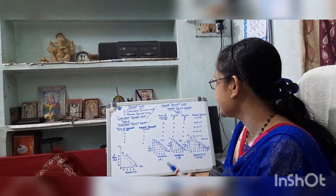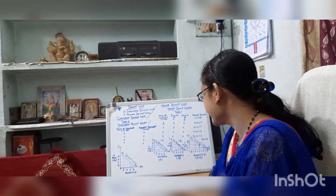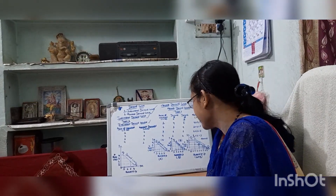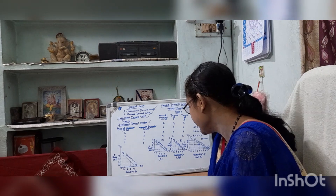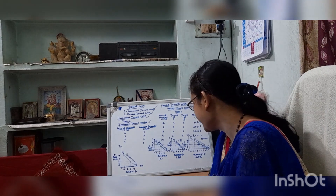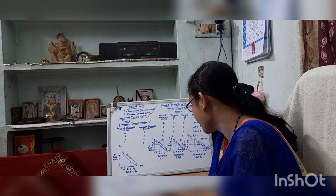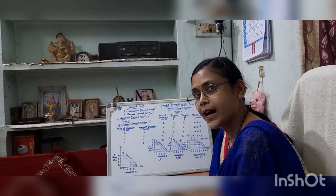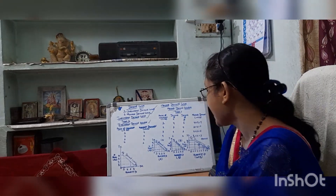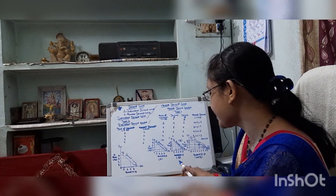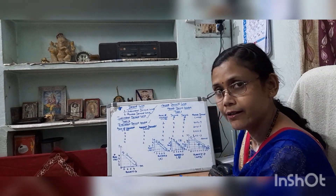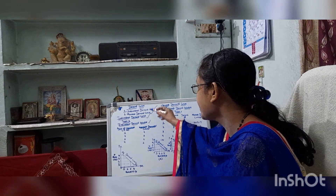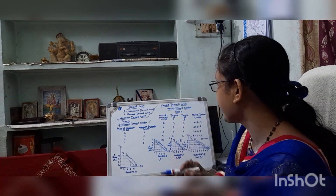Demand Curve is a graphic presentation of the demand schedule. The demand curve represents the maximum quantities per unit of time that a consumer will take at various prices. As in the case of the demand schedule, it is of two types: individual demand curve and market demand curve.